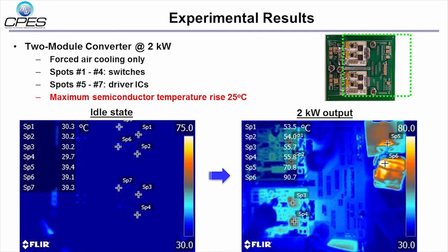When the converter processes two kilowatts, the switch temperature is saturated at 55 degrees C, which demonstrates the temperature rise at 25 degrees C, which is much lower than the previous slides.